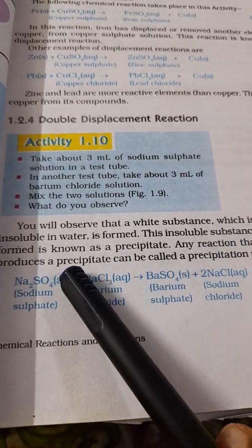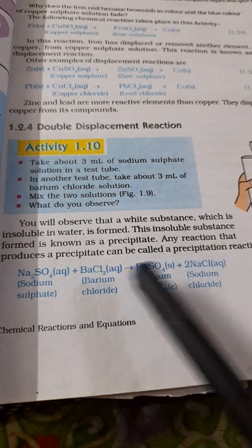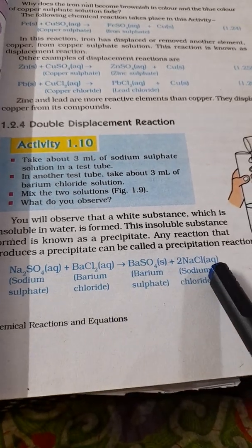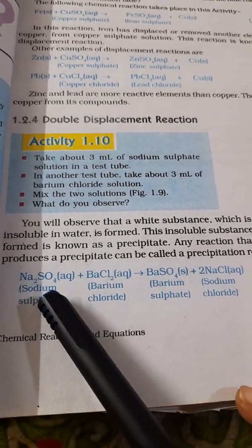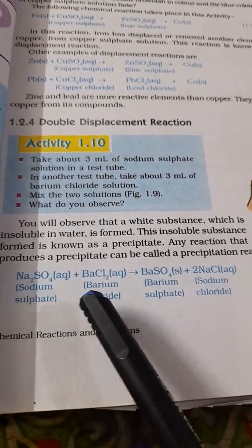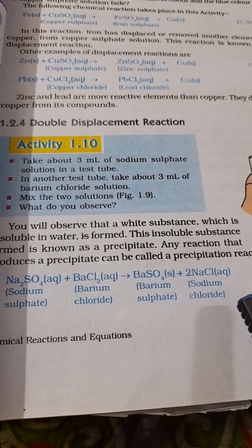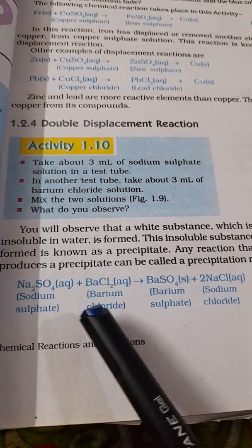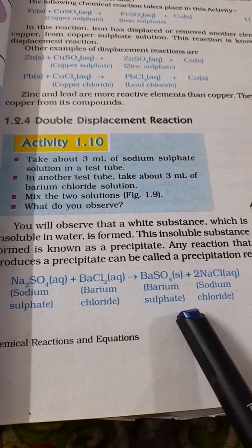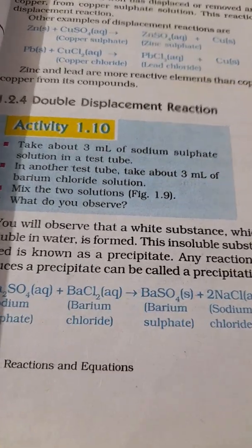This insoluble substance is what we call precipitate. Any reaction that produces a precipitate you can also call a precipitation reaction. The equation for this reaction: Na2SO4 plus BaCl2 gives BaSO4 plus NaCl. Sodium sulphate with barium chloride will give you barium sulphate and sodium chloride. With this simple activity you understood what is meant by double displacement reaction.